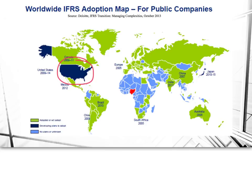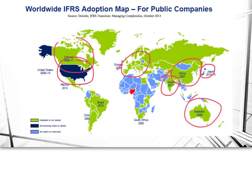If you ask what the other major economies are, the only other one also in the process is Japan. Everybody else — all of Western Europe, Australia, China, India, Canada, Brazil, Chile — all of the big markets around the world are IFRS. So you can see why, if you're a multinational company dealing in all of these areas, there's a strong push for IFRS from these companies.